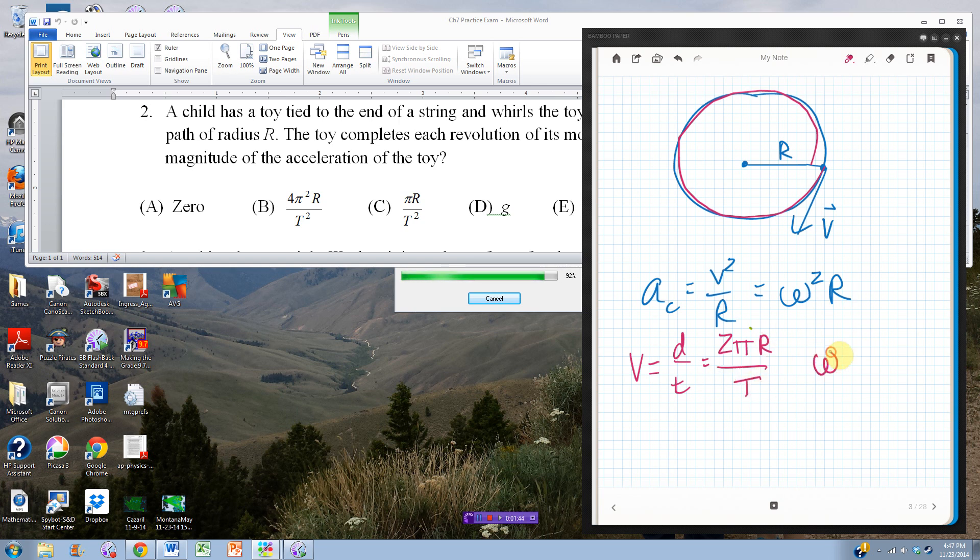Or I could replace omega. Omega is radians per second, and this completes 2 pi radians per unit of time. So I could do 2 pi radians divided by period, okay?